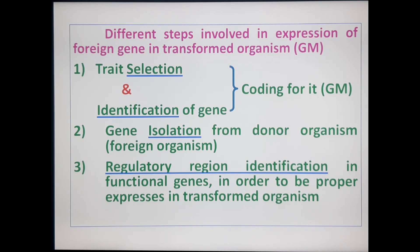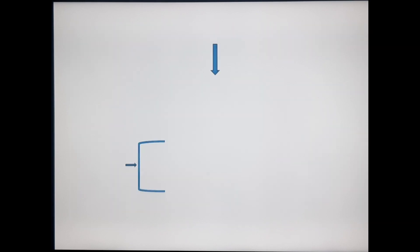The third step is regulatory region identification in functional genes, in order to ensure proper expression in transformed organisms. In functional genes, regulatory regions are present, and identification of these regulatory regions is done for proper expression in transformed organisms.